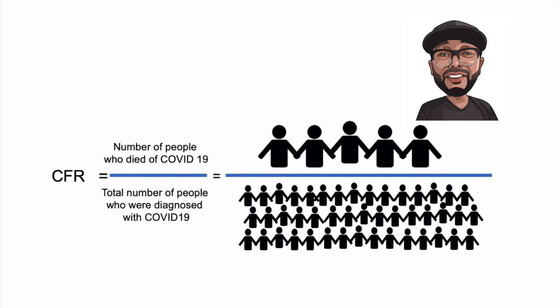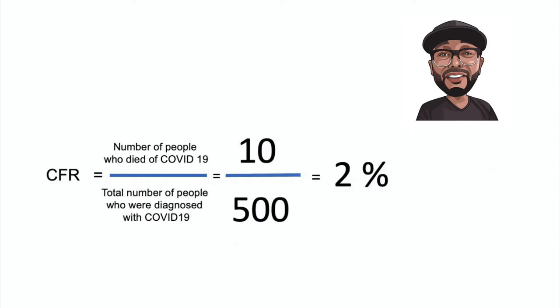One notable thing about the case fatality rate is that it is very easy to miscalculate. For example, early in an epidemic, the cases that stand out are the worst ones. People that die are people who suffer from serious disease. The problem with this is that in the case of COVID-19, many people have mild symptoms. For example, if 500 people display symptoms of a disease and 10 of them die, you would determine a case fatality rate of 2%.